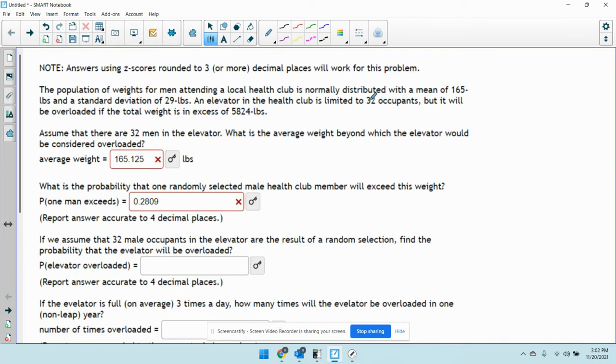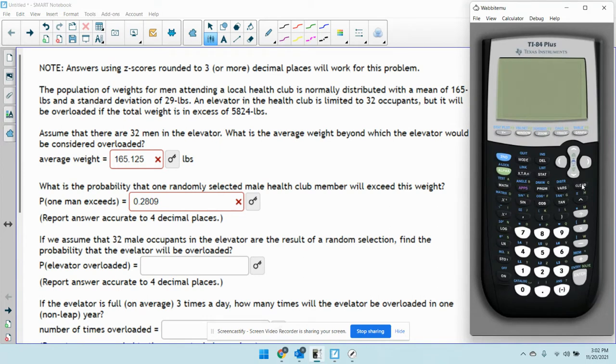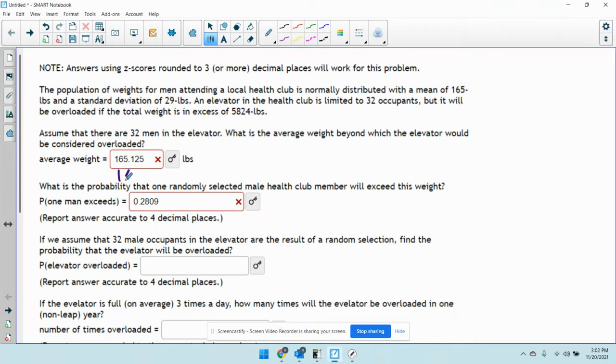If it can support 32 people and this much weight, that means each person has to take the total weight by the number of people. And you should get 182. So, it should be 182 pounds.